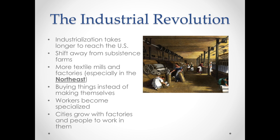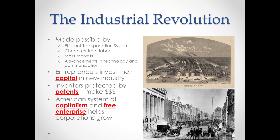For industrialization to be possible, the most important thing is efficient transportation systems — a way to get raw materials like cotton or lumber from where they're produced to a market. You also need cheap or, in the case of slavery, free labor; mass markets where lots of people are concentrated; and advancements in technology and communication. When we talk about the Market Revolution, it's really four different revolutions: the industrial revolution, the communication revolution, the transportation revolution, and the technological revolution.